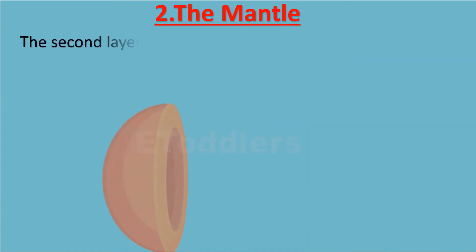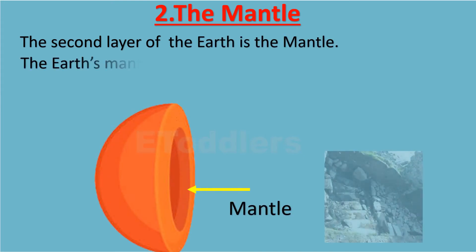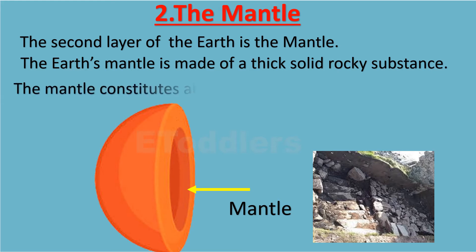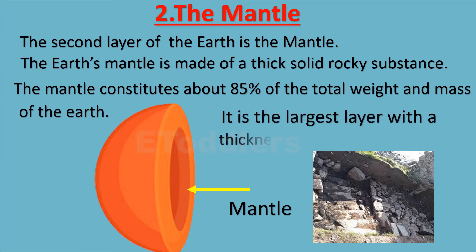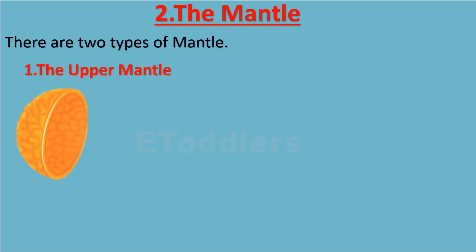The mantle is the second layer of the earth. The earth's mantle is made of a thick solid rocky substance. The mantle constitutes about 85% of the total weight and mass of the earth. It is the largest layer with a thickness up to 2900 km. There are two types of mantle: the upper mantle and the lower mantle.